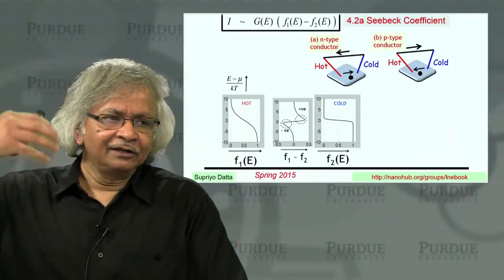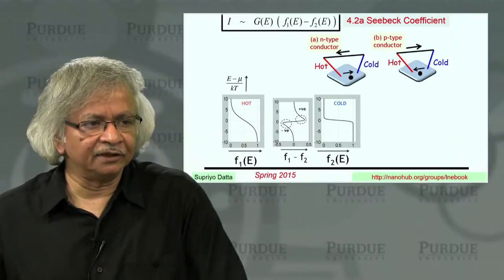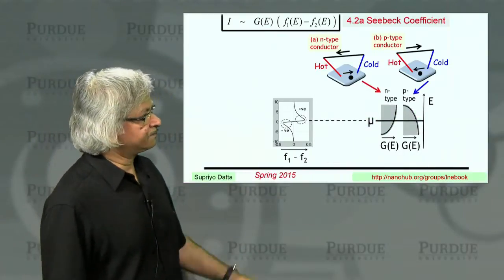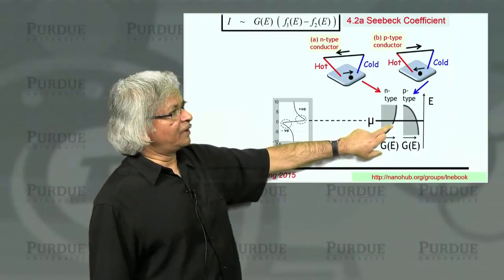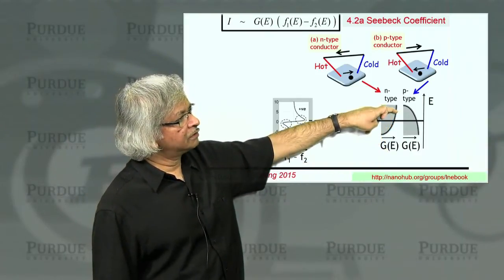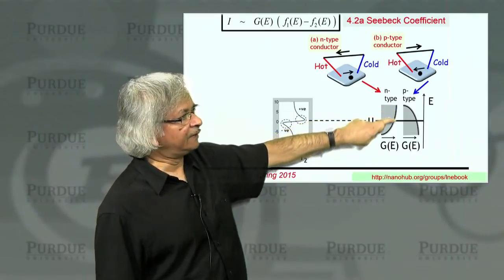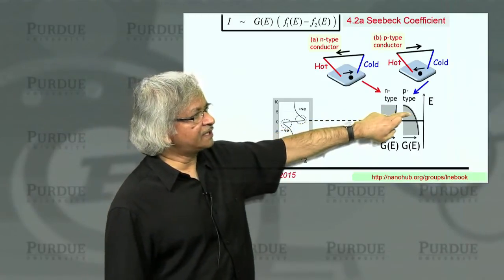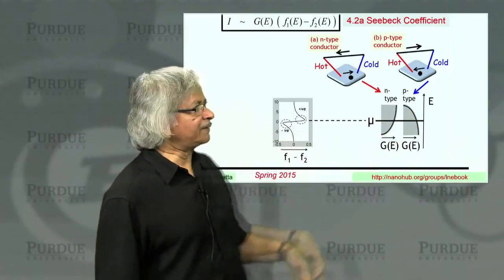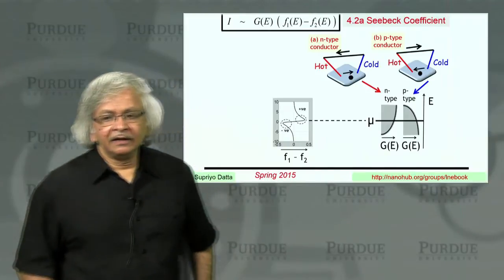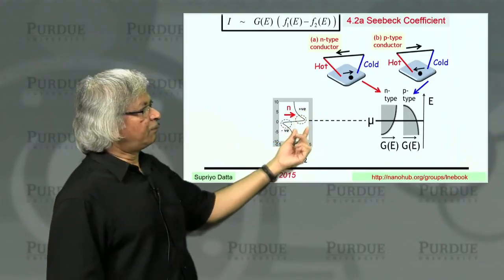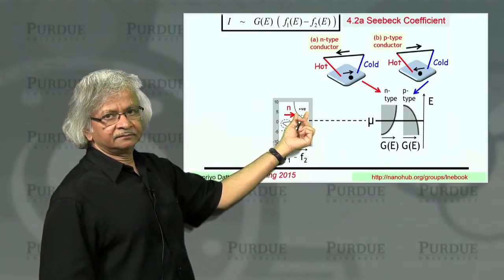And that's kind of true, except that you may not have the same number of states available at all energies. So you can imagine two types of situations. The n-type materials are those where, if you look around the Fermi energy, you've got more states available above than below.